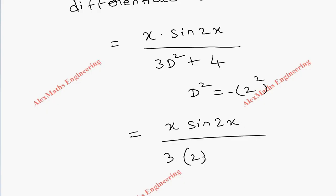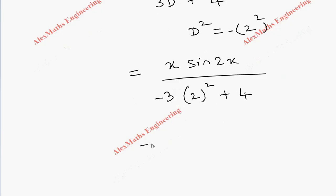Totally it is x·sin(2x) by 2² is 4, 4×3 is 12, minus 12 + 4, which is -8. So we get x·sin(2x) by -8.